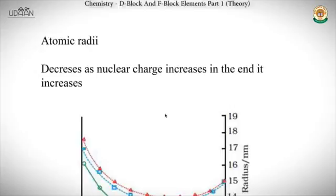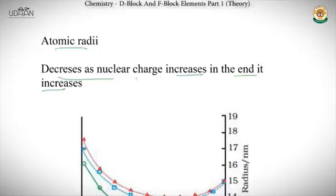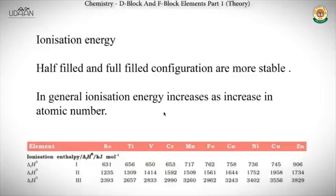Now let's look at the atomic radius trend for D and F block elements. Atomic radius decreases as nuclear charge increases across the series, but at the end of the series it increases again due to electron-electron repulsion. So initially, increasing nuclear charge increases attraction and decreases atomic radius, but towards the end electron-electron repulsion starts showing its effect.